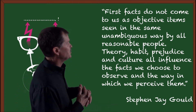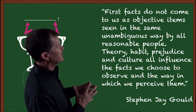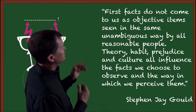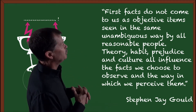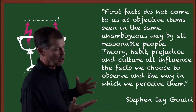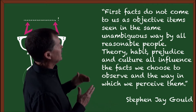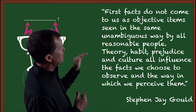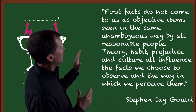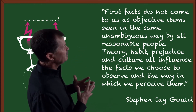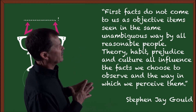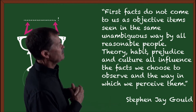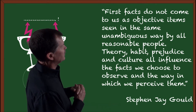As a biologist, he said: 'First, facts do not come to us as objective items seen in the same unambiguous way by all reasonable people.' He says then that theory, habit, prejudice, and culture all influence the facts we choose to observe and the way in which we perceive them.